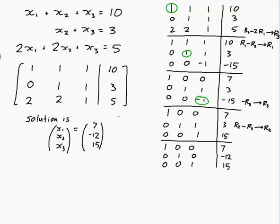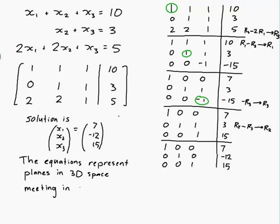We have found the intersection of three planes. The equations represent planes in 3D space meeting in a single point which is 7, minus 12, 15.